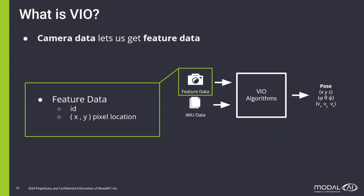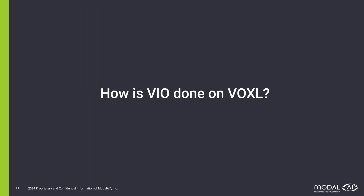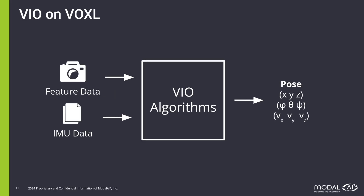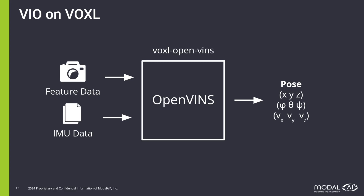Camera data gets us feature data, and feature data is simply an XY coordinate within the image and an ID to identify that feature amongst all the others. So how is VIO done on Voxel? We start with our VIO pipeline, and the VIO algorithm that we use is an open source software called OpenVINS, which lives in our own fork, Voxel OpenVINS.